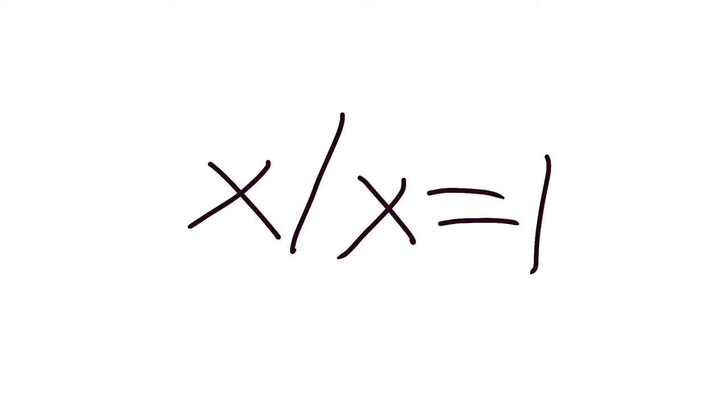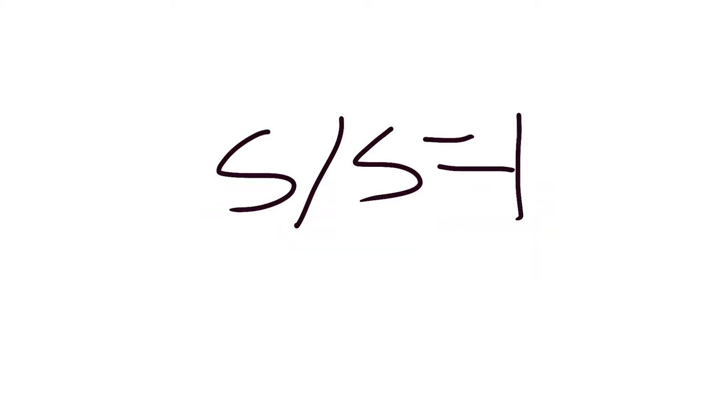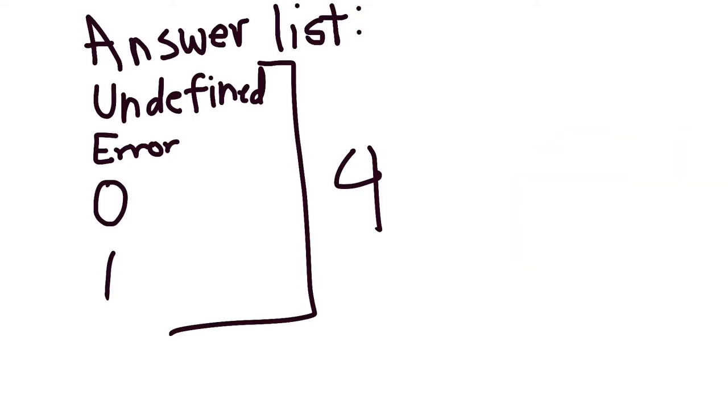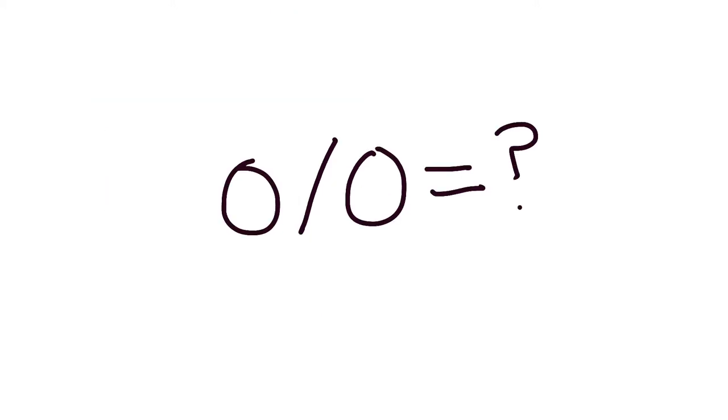Now we're going to use some math logic. There's a lot of logic in math. One of the things in math is that if you divide one number by the same number, it equals one. For example, five divided by five equals one. So with that logic, zero divided by zero should also equal one, right? It doesn't — or at least we don't know if it does yet — but we're going to add that to our list. Boom. We have four answers. We can use these four answers to finally find what zero divided by zero truly equals.